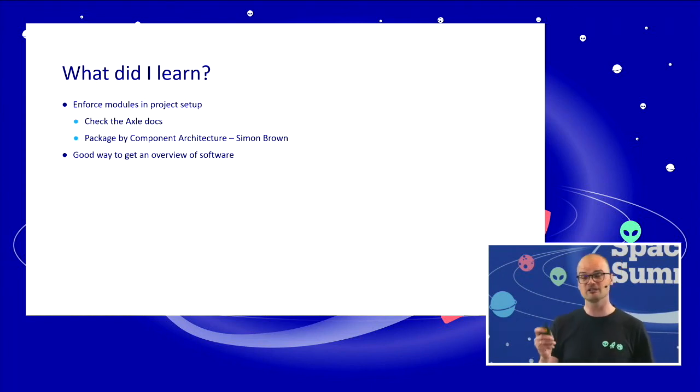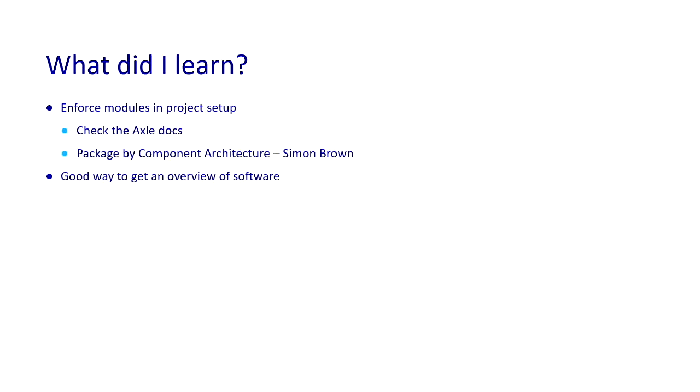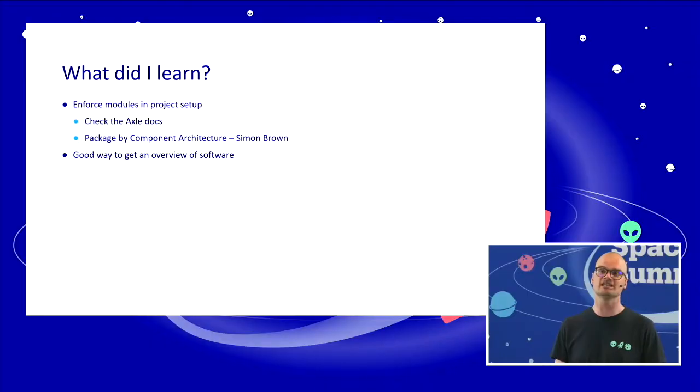Check the AxonIQ docs. They've got a great page in their documentation about this. And mostly they refer to Package by Component Architecture by Simon Brown. Do this, do that, and you will not get into this situation. Because Maven is pretty strict on what is allowed to depend on what and you are really explicit about it. Really works well.